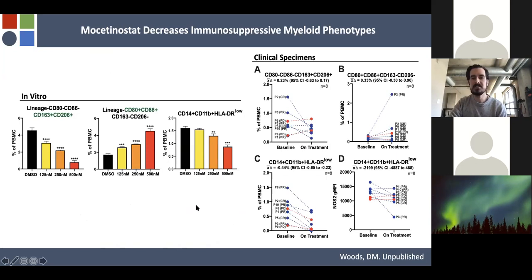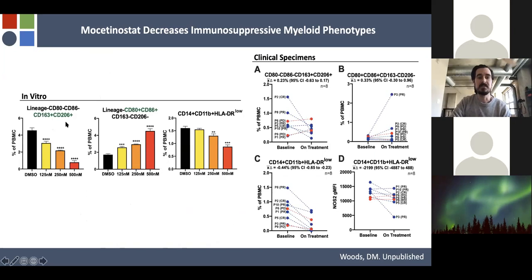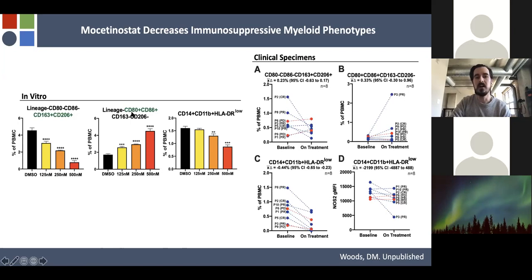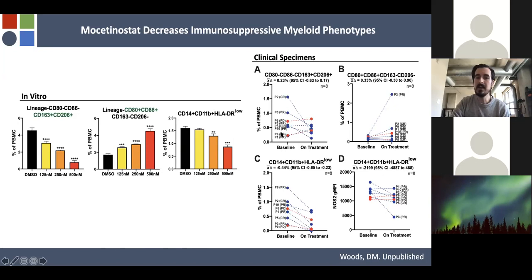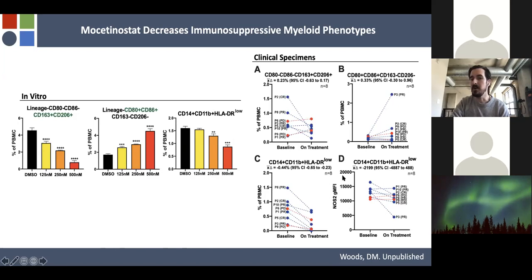When treating with mosatemistat, there's downregulation of an M2-like phenotype — cells expressing CD163 and CD206 — and upregulation of an M1-like phenotype, cells expressing CD80 and CD86, and downregulation of MDSC phenotypes. In patient samples, we see the same exact trend: downregulation of M2, upregulation of M1-like, and statistically significant downregulation of MDSCs even with the limited number of patients, plus downregulation of NOS2 expression — the effector molecule in those MDSCs. It does appear to be impairing an immunosuppressive myeloid phenotype.